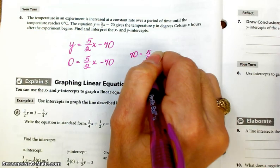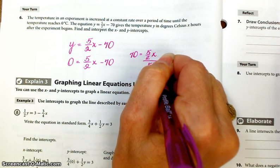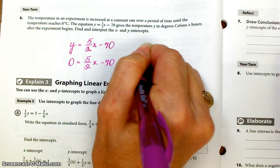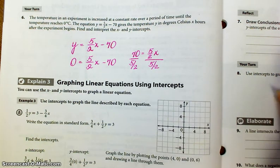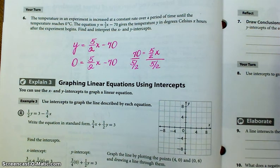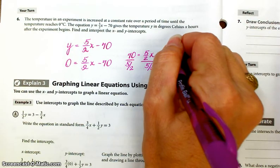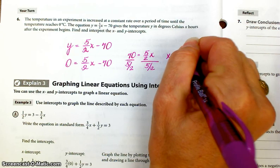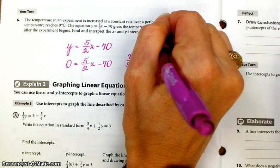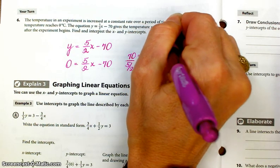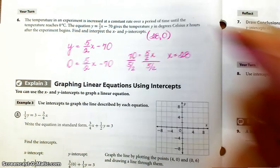All right, so dividing by 5 halves, that's basically saying divided by 2 1/2. So, 70 divided by 2 1/2. All right, 70 divided by 2 1/2 gives me a value of 28. So, my x-intercept is 28, 0, if I wanted to put it on a graph.